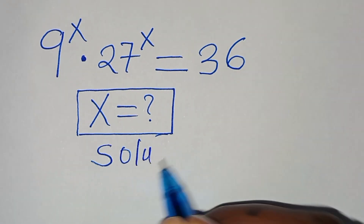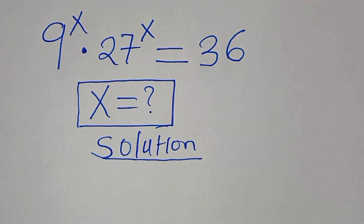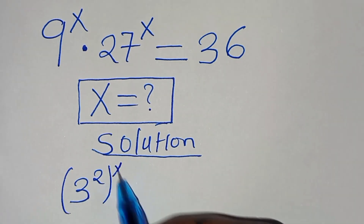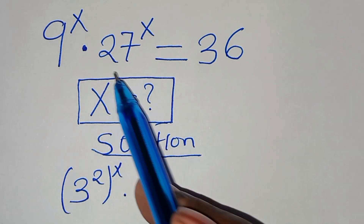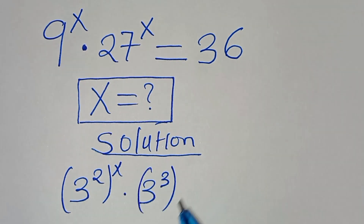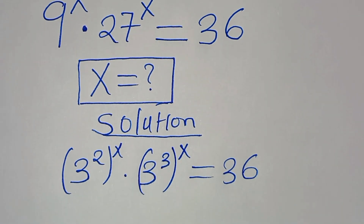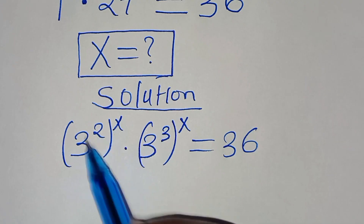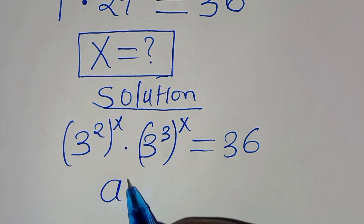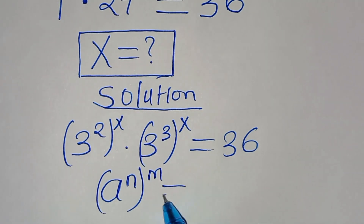We can express 9 to the power of x as 3 squared raised to the power of x, multiplied by 27 to the power of x, which we can express as 3 cubed raised to the power of x. This equals 36. Now 3 to the power of 2 raised to the power of x, and 3 to the power of 3 raised to the power of x, are in the form of a to the power of n raised to the power of m.